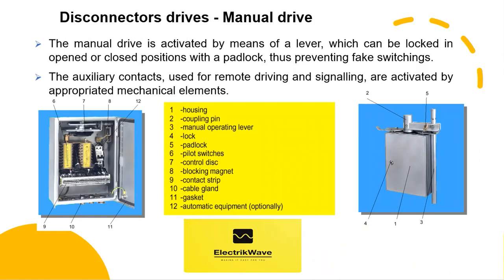The manual drive is activated by means of a lever, which can be locked in opened or closed positions with a padlock, thus preventing false switchings. The auxiliary contacts, used for remote driving and signaling, are activated by appropriate mechanical elements. Refer to the figures shown for various components of the manual drive.